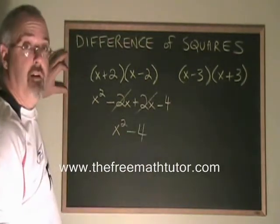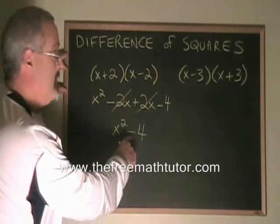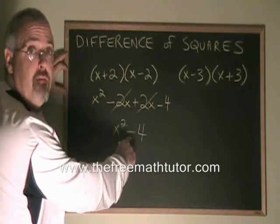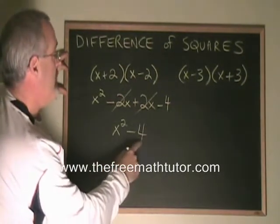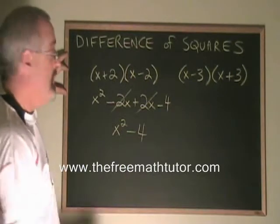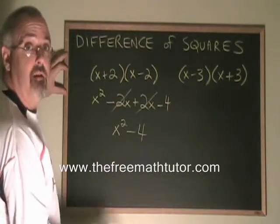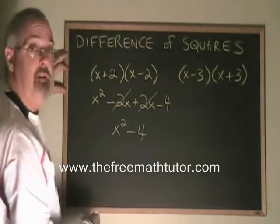This is called the difference of squares because it is a difference, a subtraction. And both the first term and the second term are squares. x squared is x squared, 4 is 2 squared.